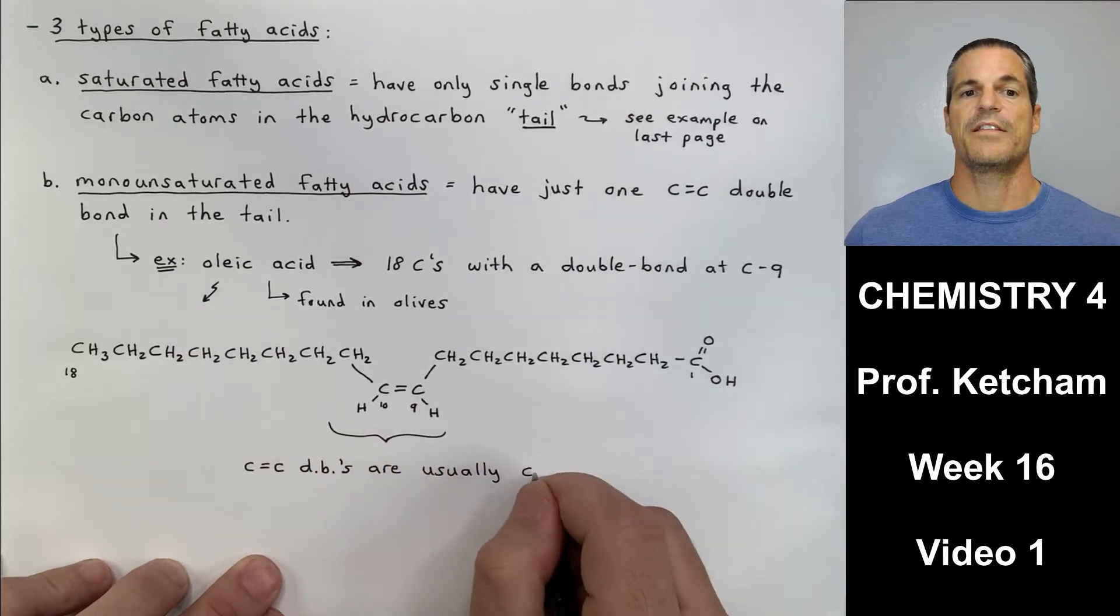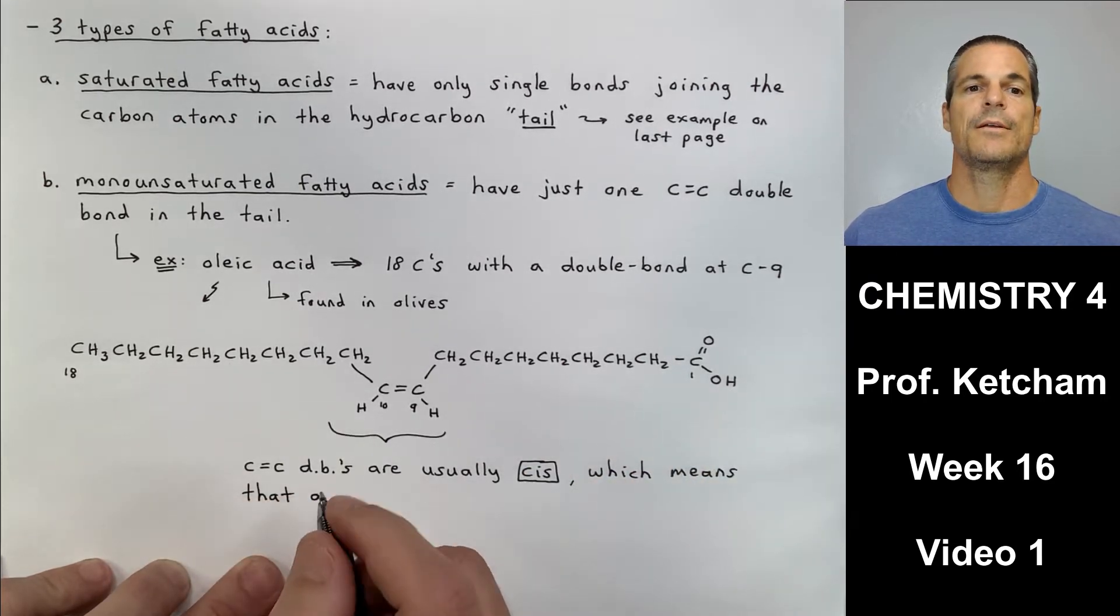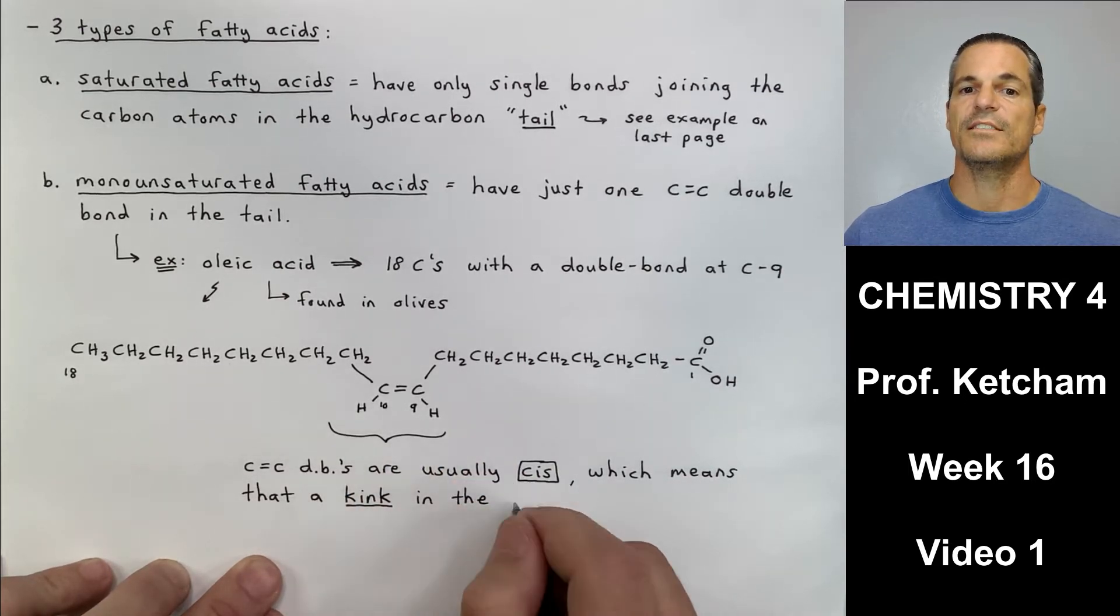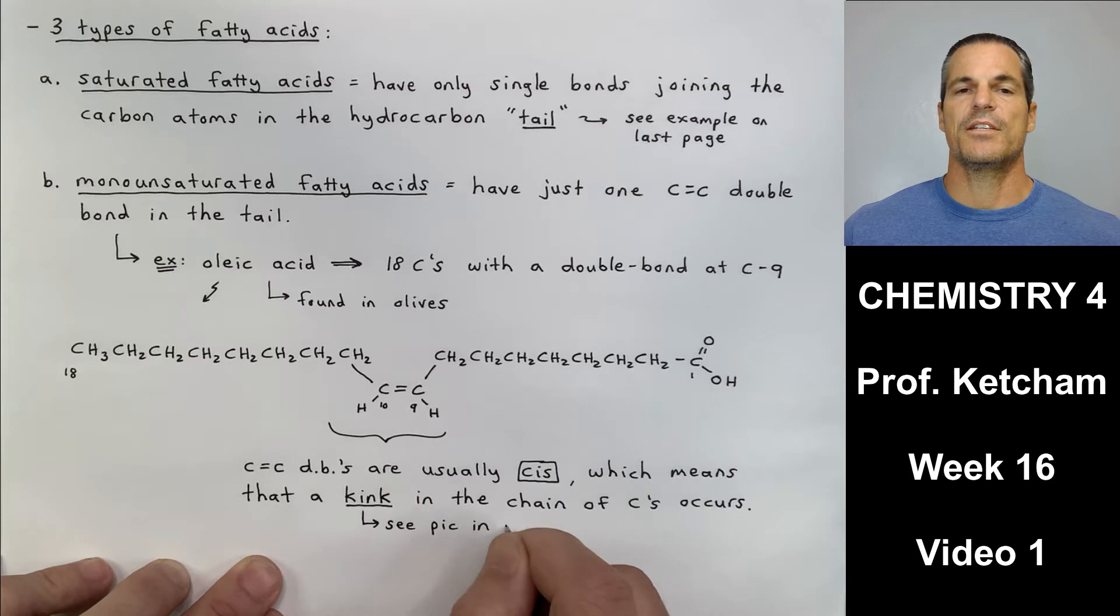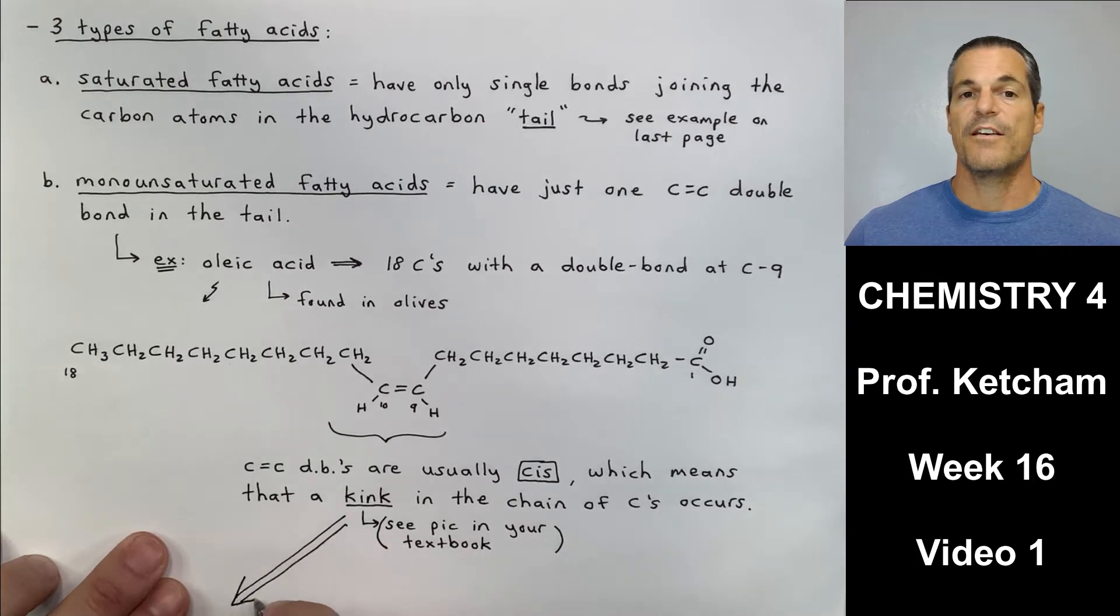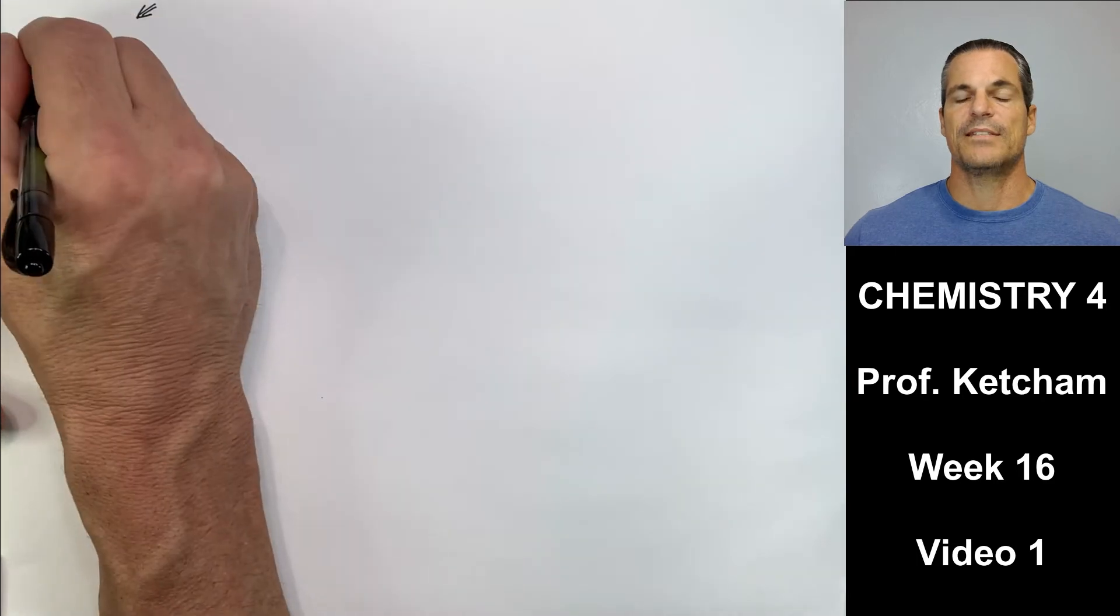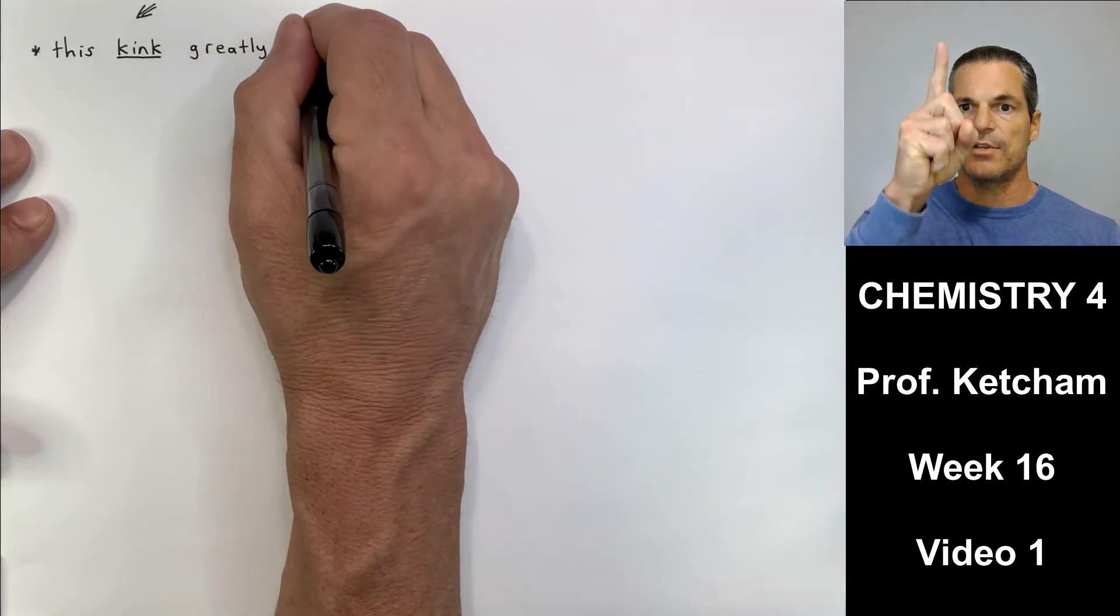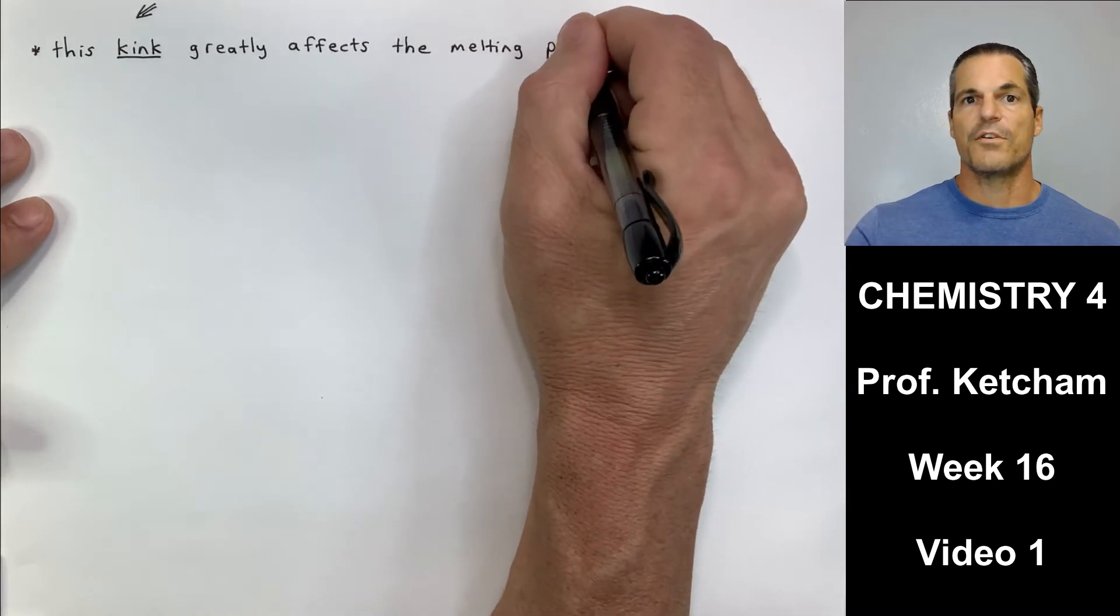So I'm drawing it backwards. If you start your count from the carboxylic acid carbon, remember that's the major functional group, that's where we would start our counting. We do see that we have a cis double bond off of C9. So a carbon-carbon double bond on C9 is really in between carbons 9 and 10. The double bonds that we're going to focus on will always be cis in our chapter 15. Carbon-carbon double bonds are usually cis, which means that a kink in the chain of carbons occurs. This kink is much easier to see if you just go ahead and focus on your textbook's picture, which is page 513, figure 15.2.